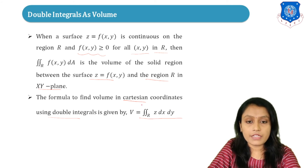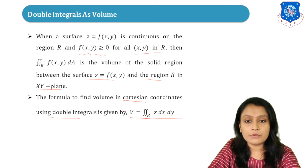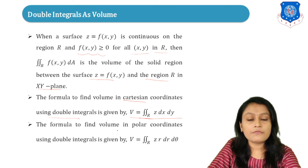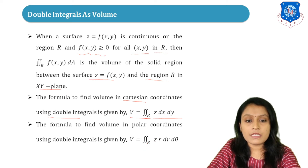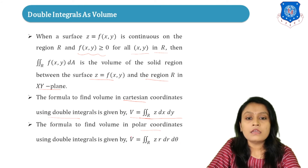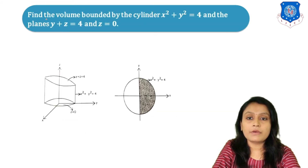Whenever Cartesian coordinates are given, we use V equals the double integral over R of z dx dy. The formula to find volume in polar coordinates using double integrals is V equals the double integral over R of z times R dr d-theta, where R dr d-theta replaces dx dy.